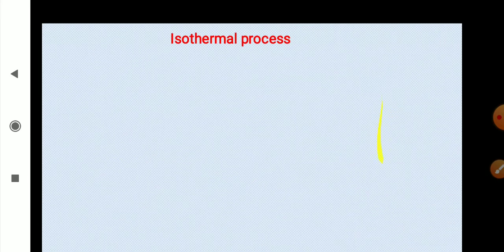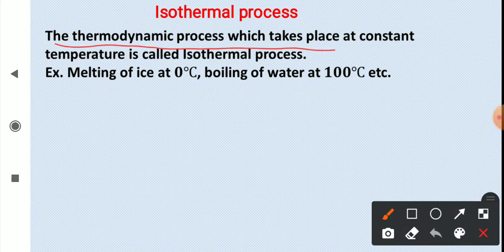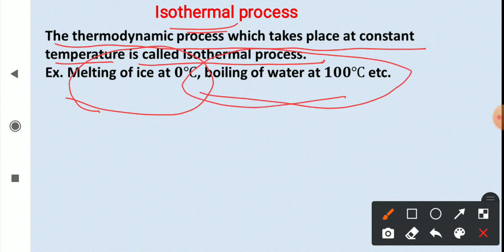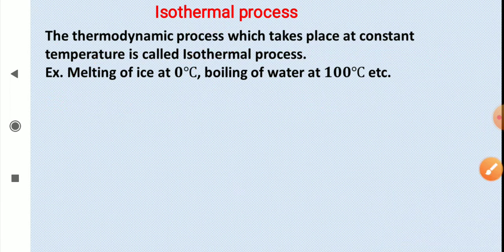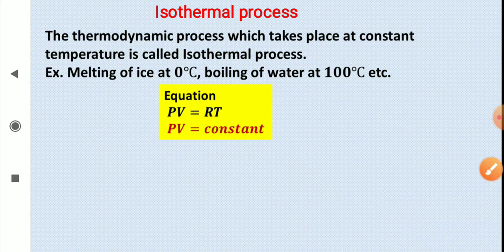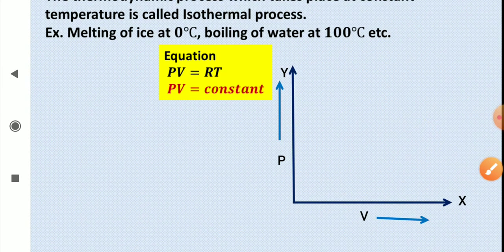The isothermal process is the thermodynamic process which takes place at constant temperature. For example, melting of ice at 0°C or boiling of water at 100°C — the change in temperature is zero. The equation for this process comes from the ideal gas law: PV = RT, and since temperature is constant, PV = constant.